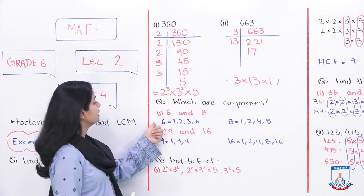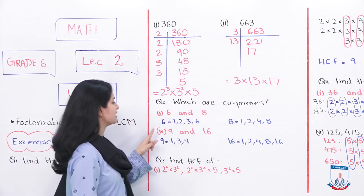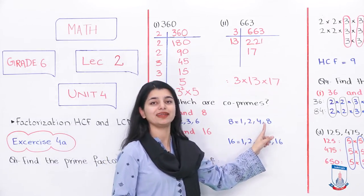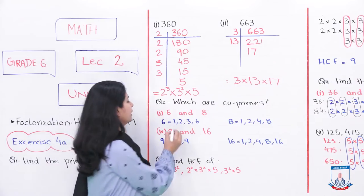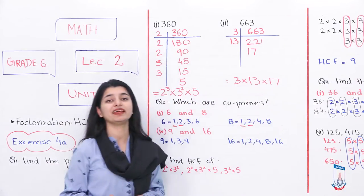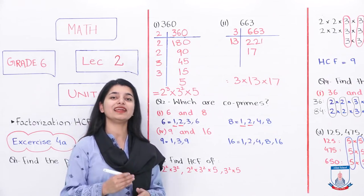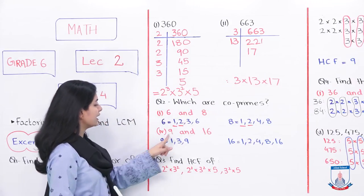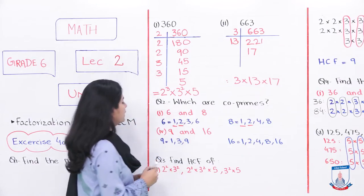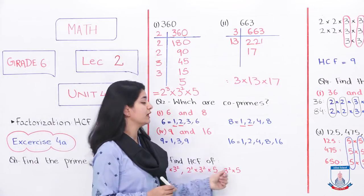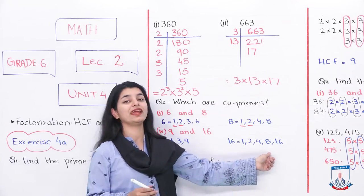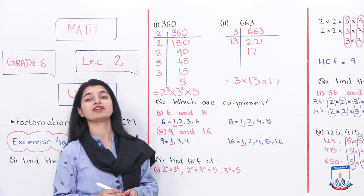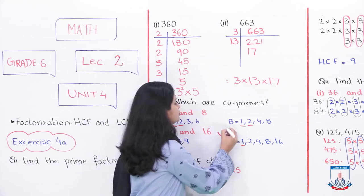Let's look at an example: six and eight. The factors of six are 1, 2, 3, and 6. The factors of eight are 1, 2, 4, and 8. These two share common factors other than 1 — namely 2 — so they are NOT co-primes. Now consider 9 and 16. The factors of 9 are 1, 3, and 9. The factors of 16 are 1, 2, 4, 8, and 16. These two have no common factor besides 1, so they are co-primes.